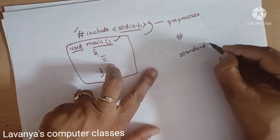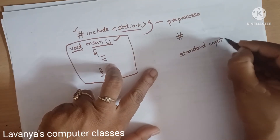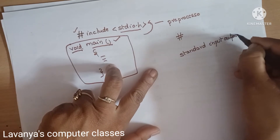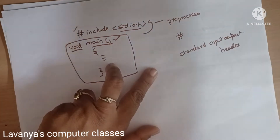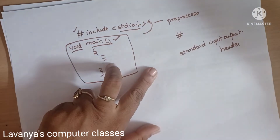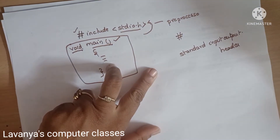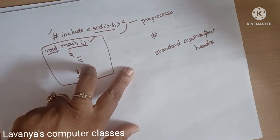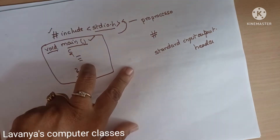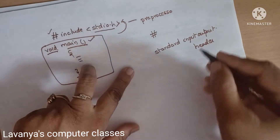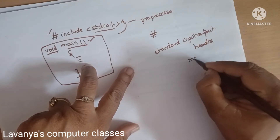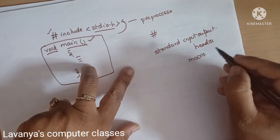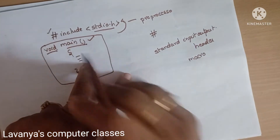stdio.h stands for Standard Input Output, and .h means header file. A header file is a file with a .h extension. It contains all function declarations and macro definitions, which can be included into our source file.